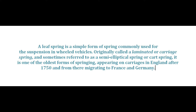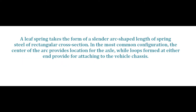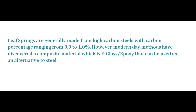In the 1750s it first appeared in England, and later it migrated to France and Germany, and it has improved a lot and is still improving. A leaf spring is in the shape of an arc, which is commonly made of high carbon steel. This spring has a rectangular cross section, with the carbon percentage raised from 0.9 to 1%. Recent discoveries have proved that composite materials can be used as alternatives for leaf spring.